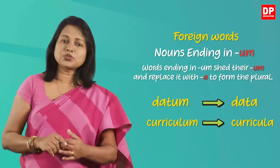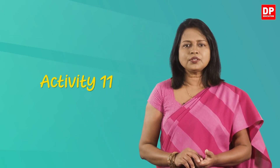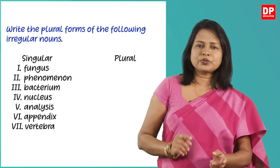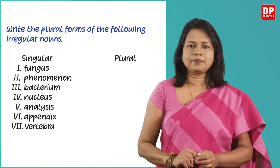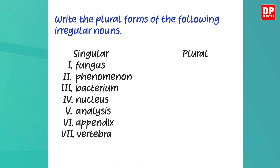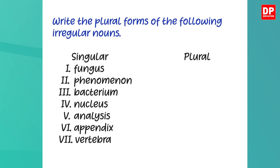Hope you are clear about the foreign plurals. Let's do an activity from your textbook — activity 11 on page 90. You have to write the plural forms of the irregular nouns given. Pause the video and do it. Let's check your answers. The first word is fungus — a foreign word ending in -us, so you replace -us with -i. The plural is fungi, spelled f-u-n-g-i. Next is phenomenon, a word ending in -on, so the plural is phenomena, spelled p-h-e-n-o-m-e-n-a.